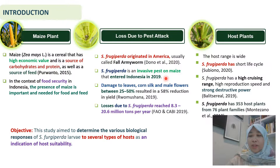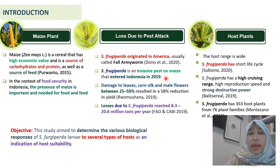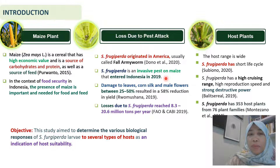Introduction. Maize is a cereal that has a high economic value and is a source of carbohydrate and protein, as well as a source of food. In the context of food security in Indonesia, the presence of maize is important and needed. One of the main obstacles to maize production in Indonesia is pests. Spodoptera frugiperda is the main pest of the maize plant.